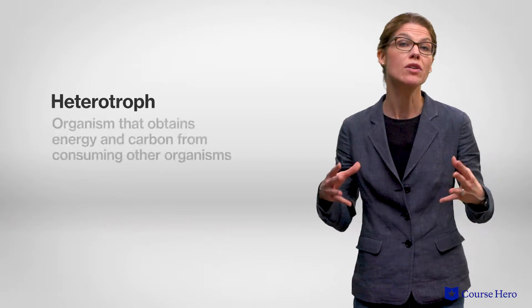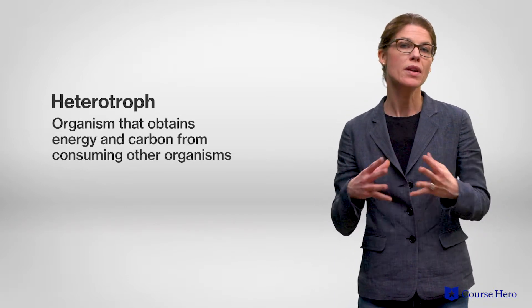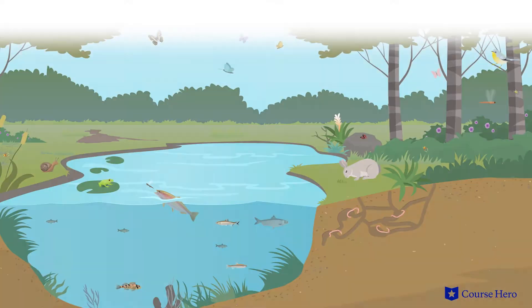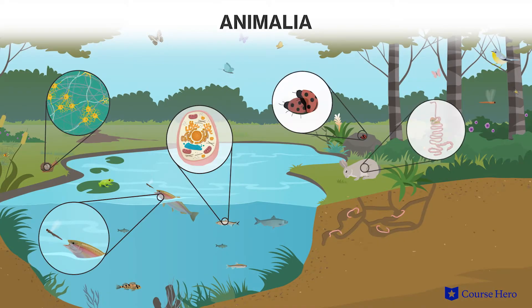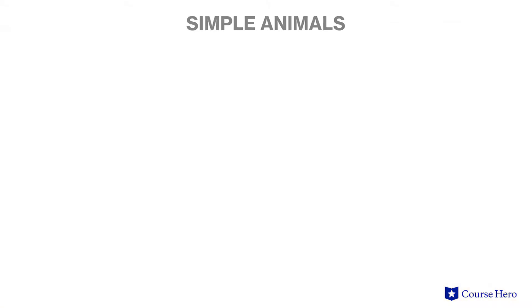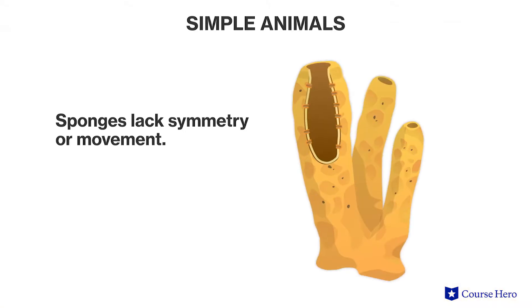The Kingdom Animalia consists of organisms that are heterotrophic, meaning that they must obtain carbon and energy from consuming other organisms. All animals are multicellular, and most contain specialized tissues and organs. The simplest animals, sponges, lack symmetry or movement.